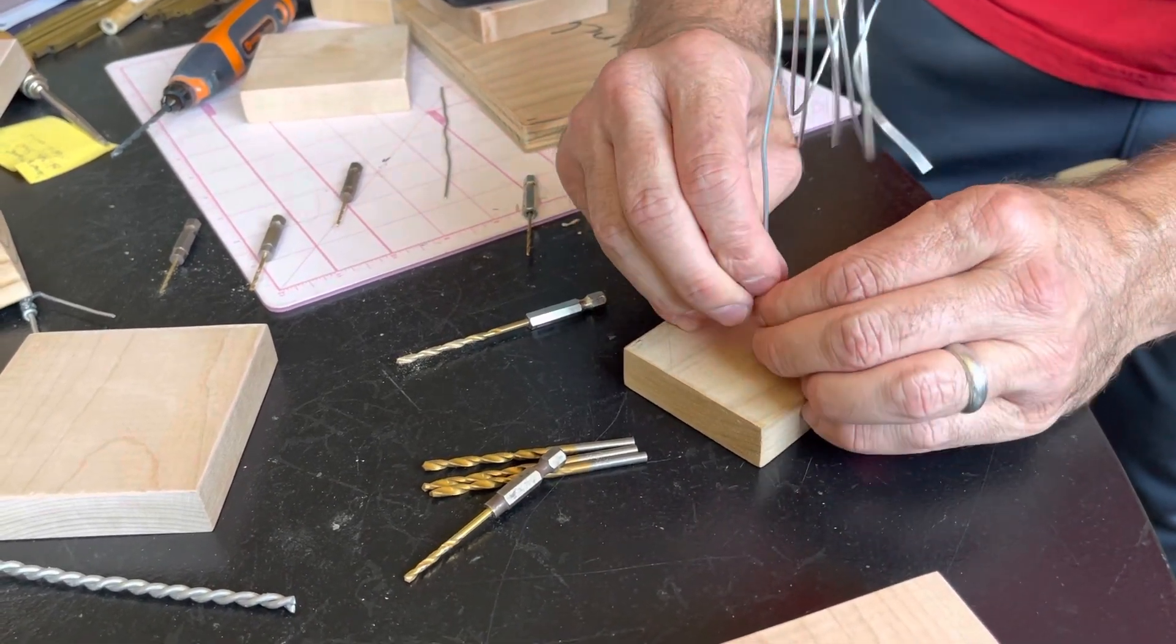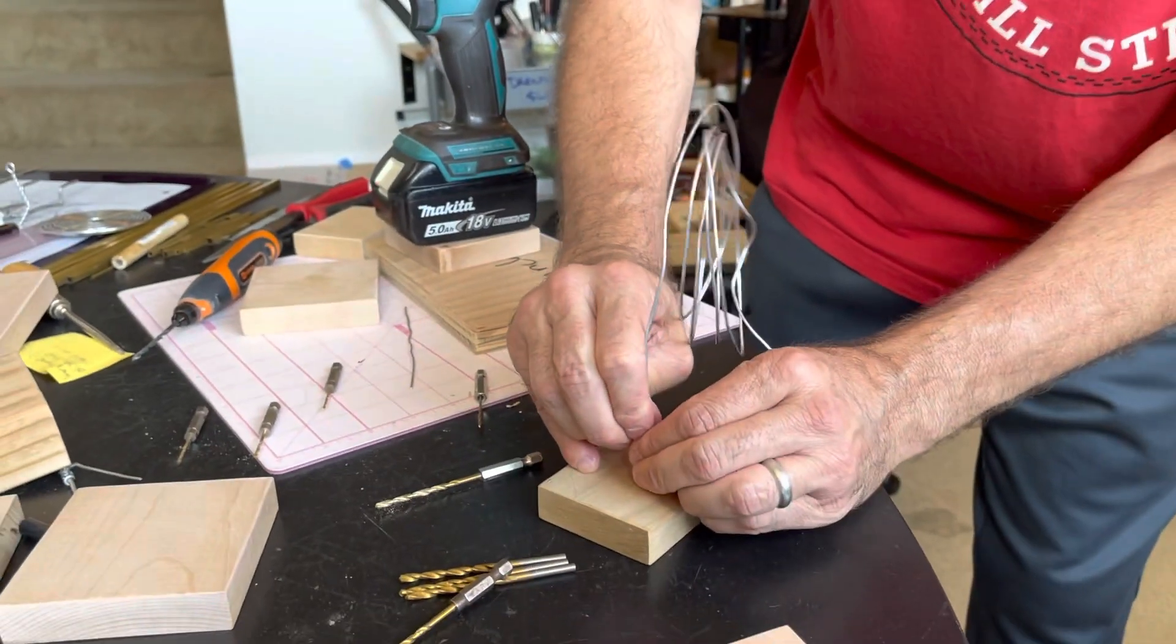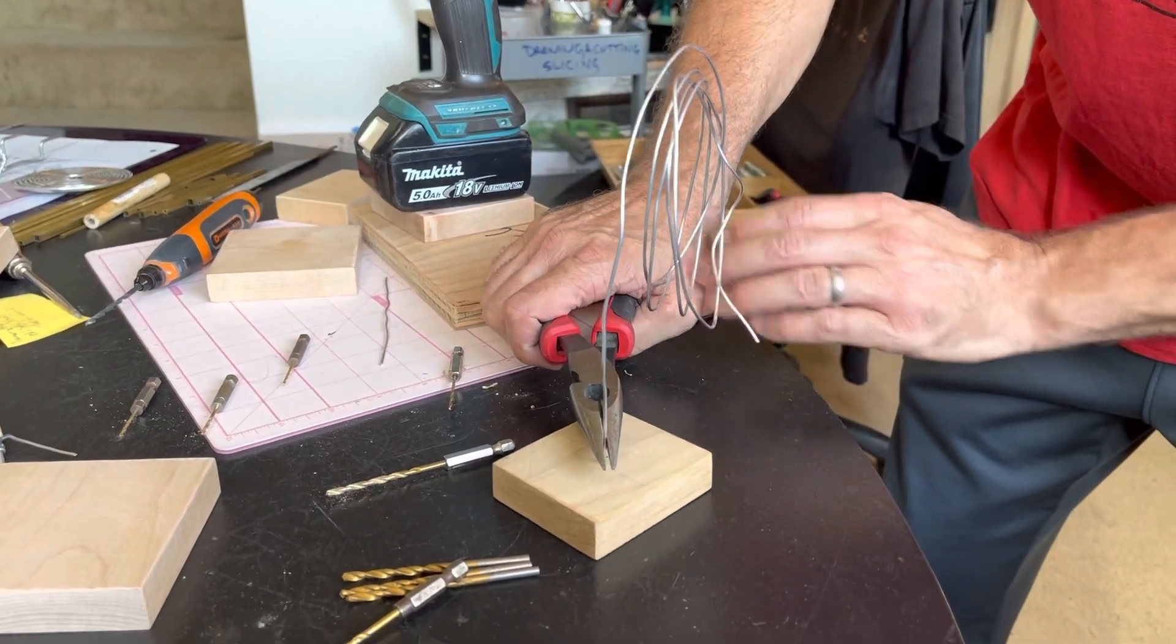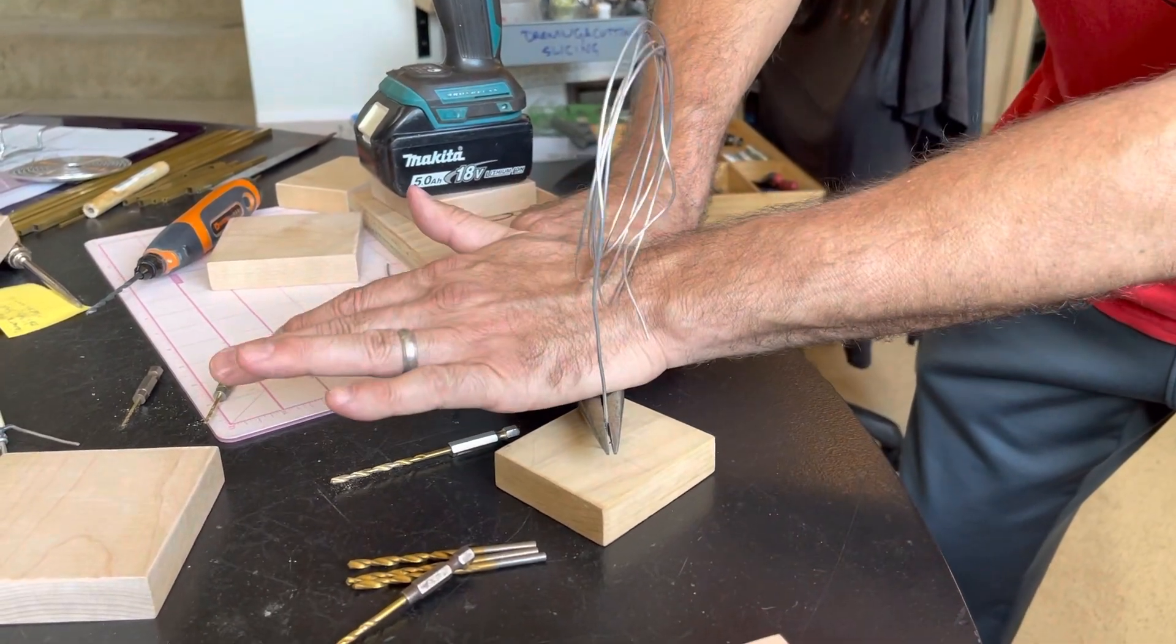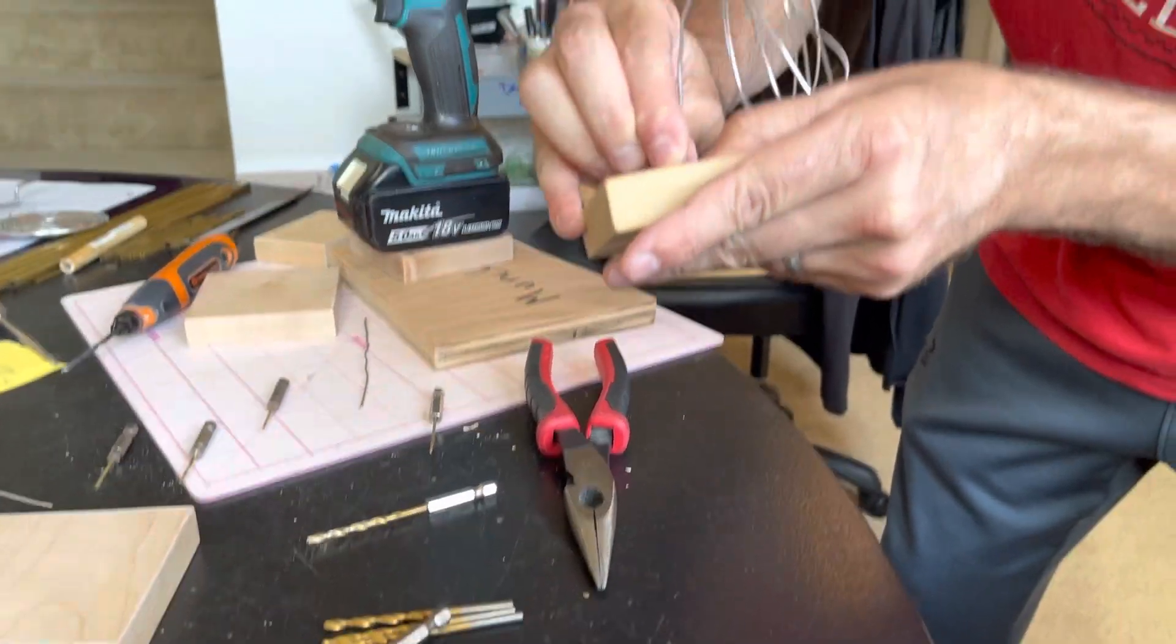Let's see if this now, oh yeah there we go. So that was an actual 1/16th bit and I didn't go all the way through so I could push it all the way down in there. Then if I need to again, grab the needle nose, get a nice snug grip, push down, and then try not to do that and bend it, which I just did. Whoopsie.